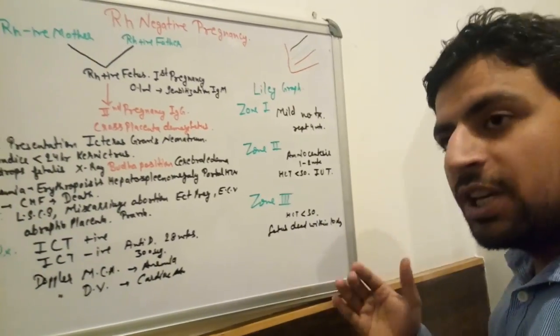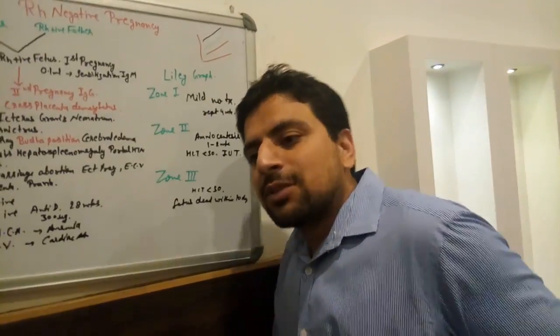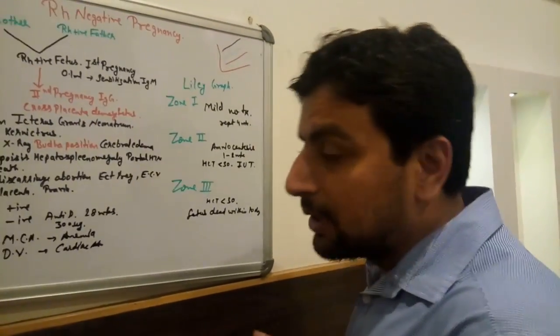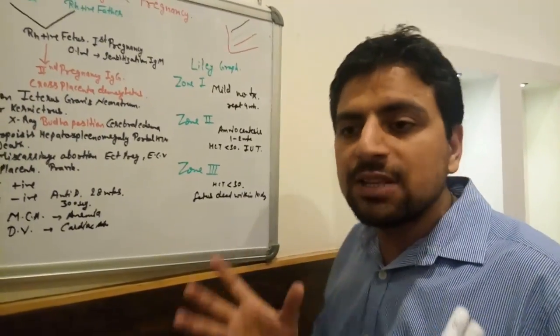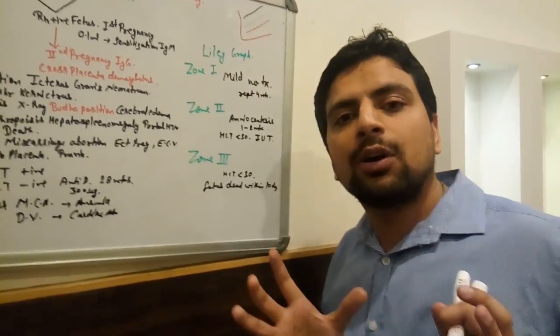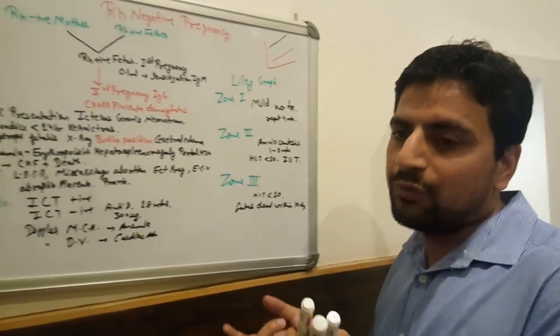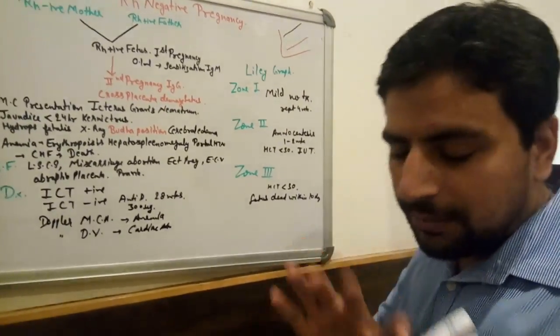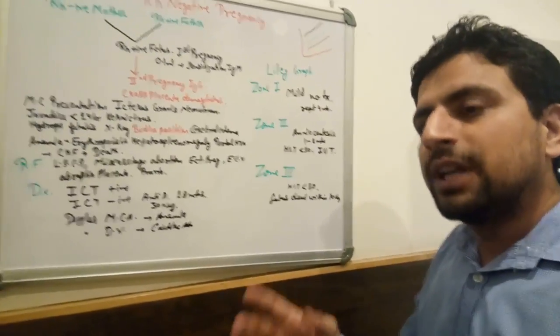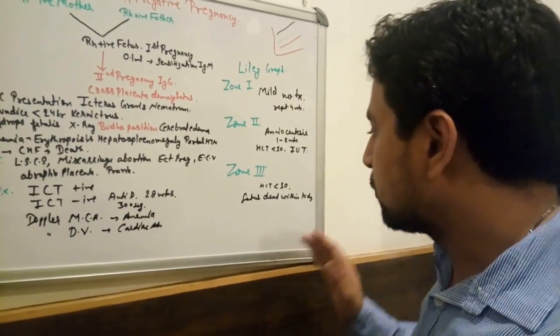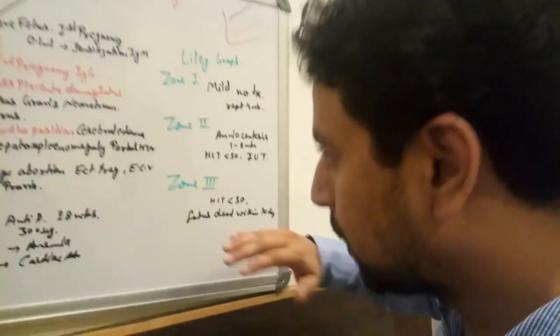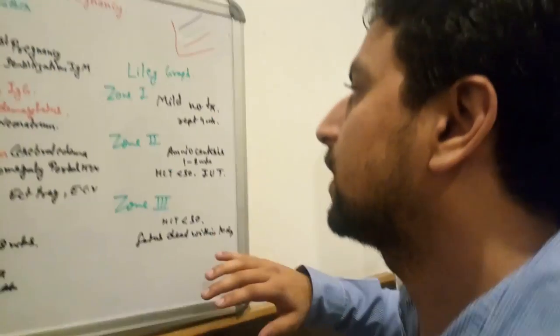But in Zone 3, if baby is already 34 weeks, we can deliver the baby. When is baby viable? Baby is viable at 28 weeks, so we can deliver baby after 28 weeks also, but we have to rule out and check everything.